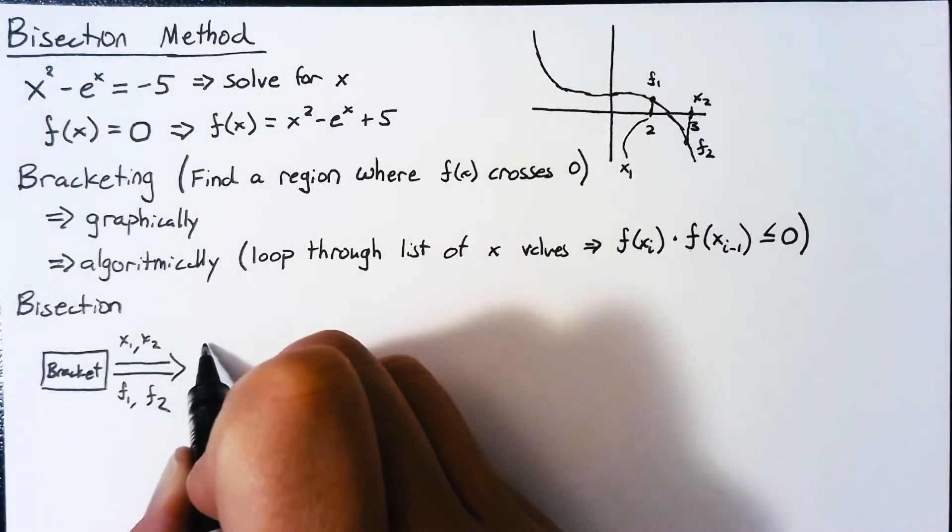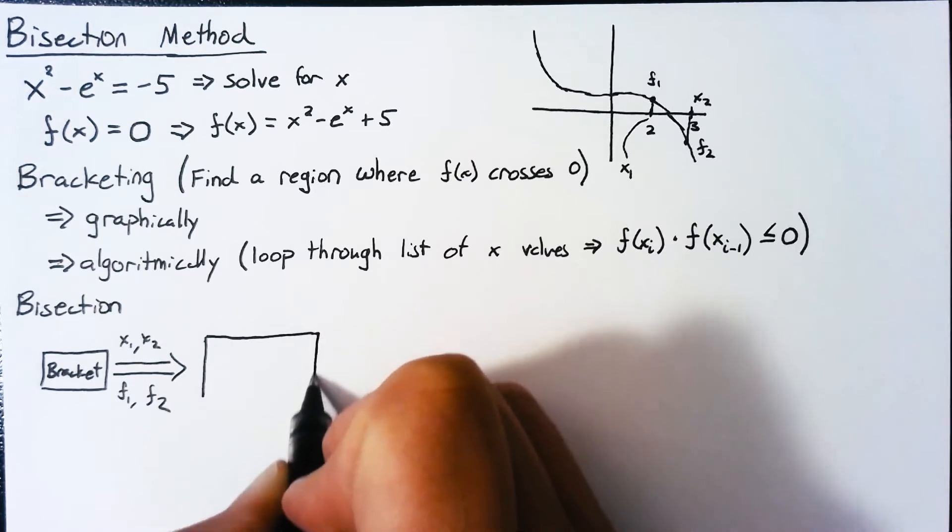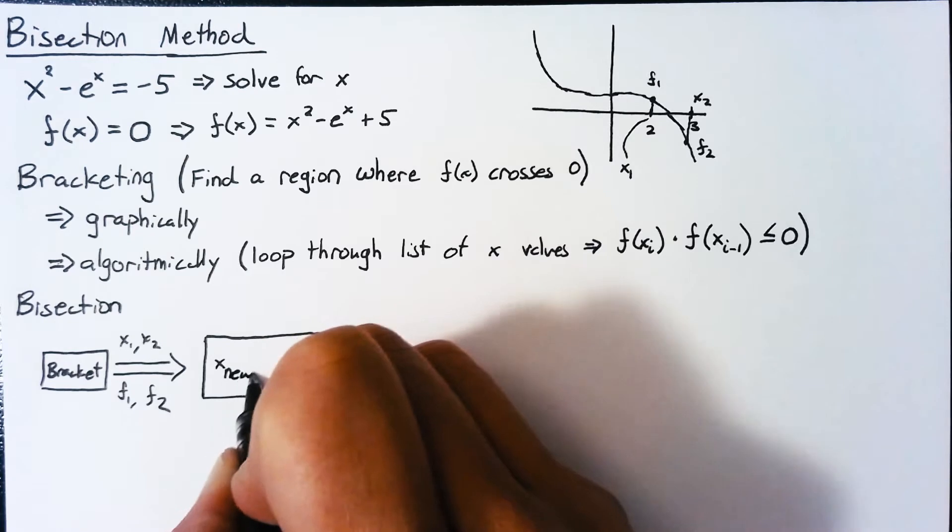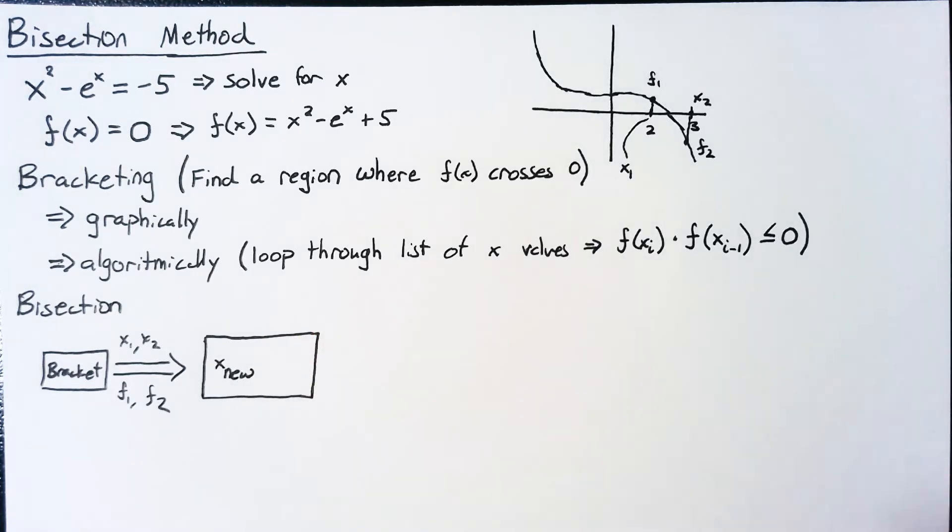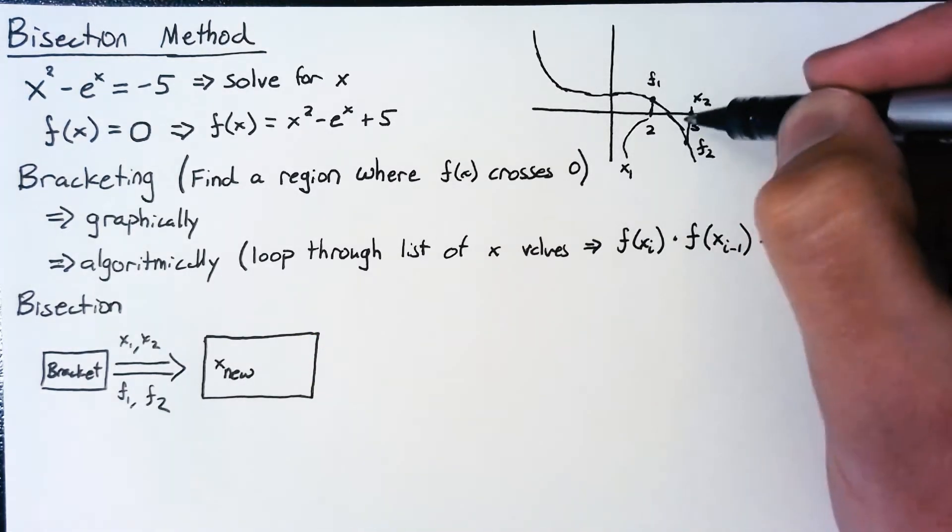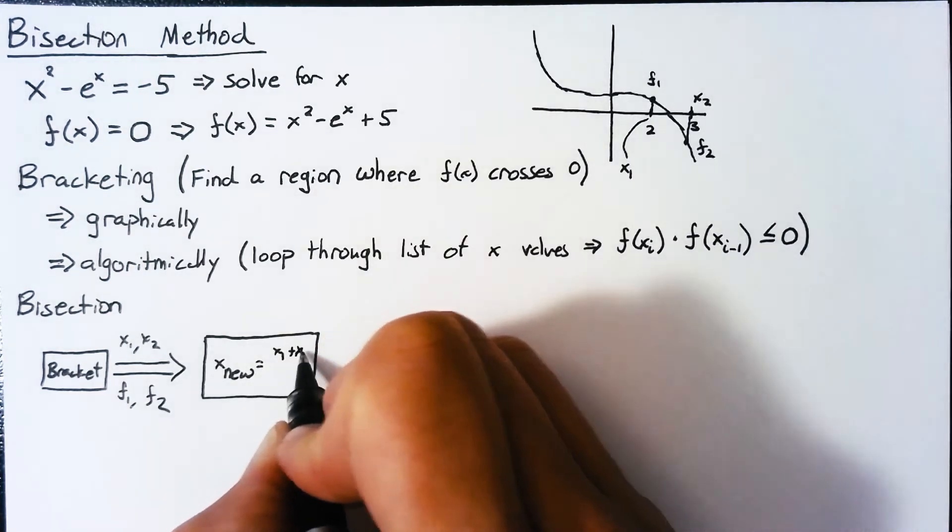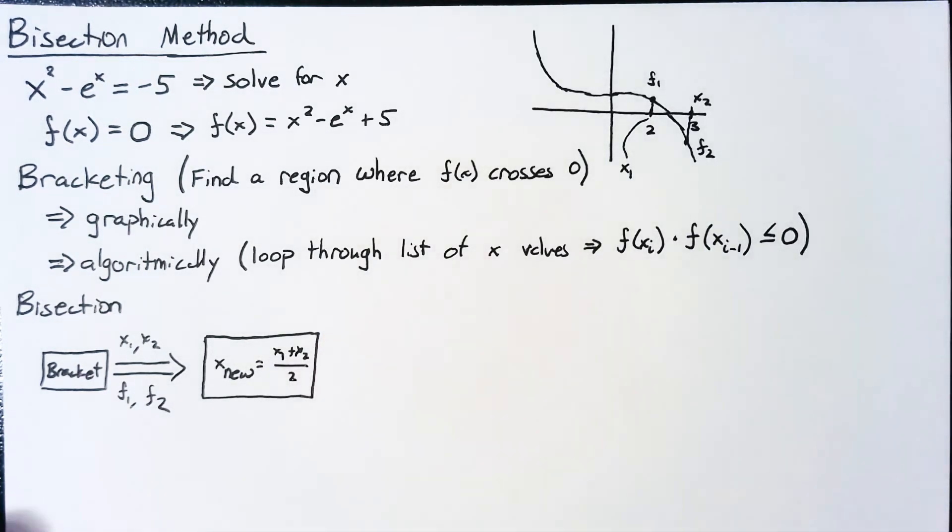Once we have those, we start the process of bisection. Now, the core of the bisection is finding the new x value that we're going to evaluate. So this x nu that I'm going to call it is simply the central point of our values. So this is x1 plus x2 divided by 2. It's the average of these.